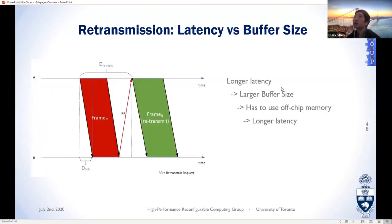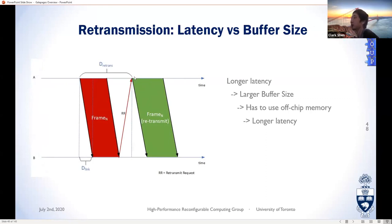Looking at retransmission: node A sends a frame to B; B waits until the last bit arrives to check if it's a good frame. If corrupted, B sends a retransmission request to A, or A has a timeout mechanism. Either way, A resends the old frame. The retransmission buffer must be large enough to cover all data sent between the time A sent the first bit until A received the retransmission request.